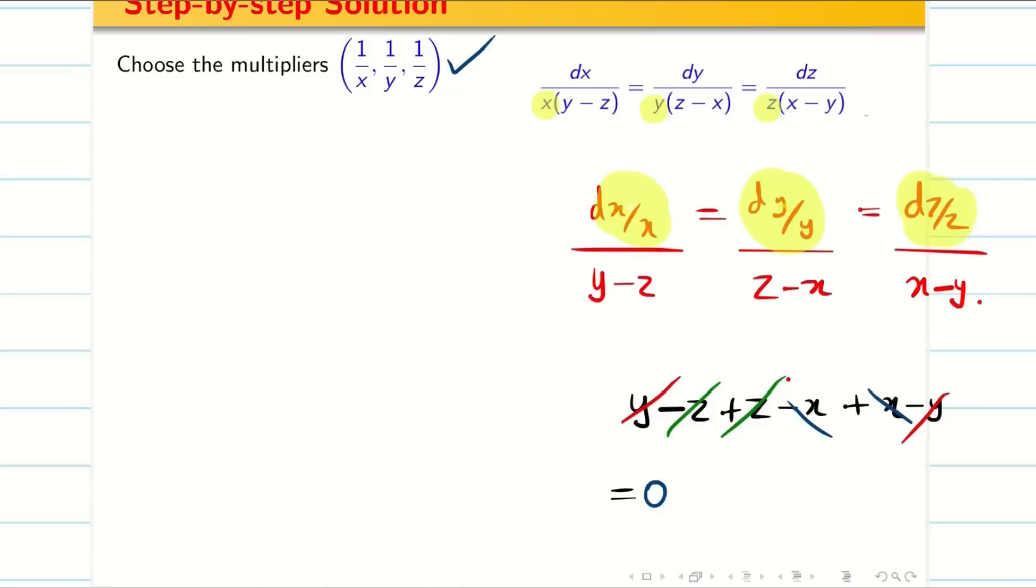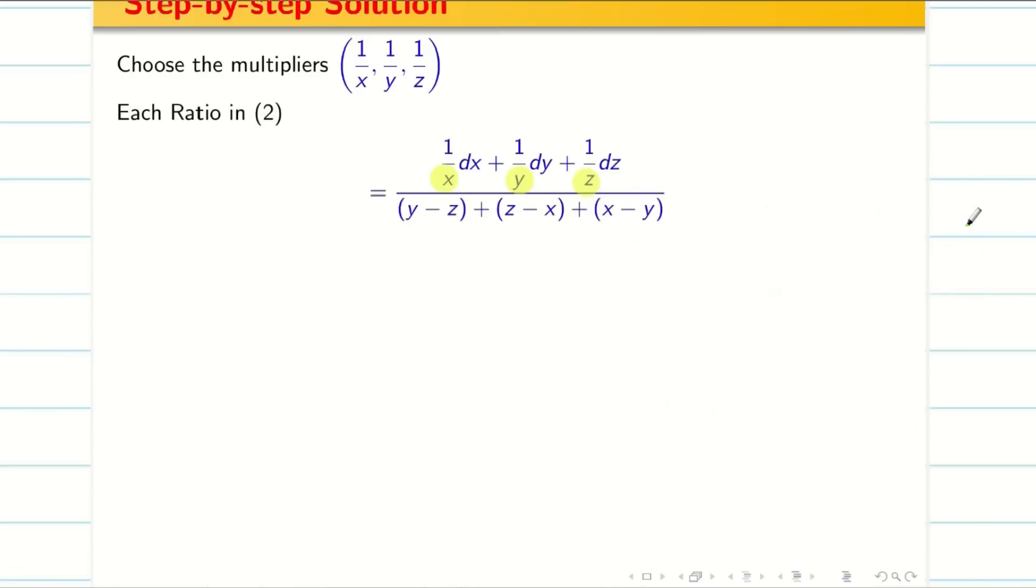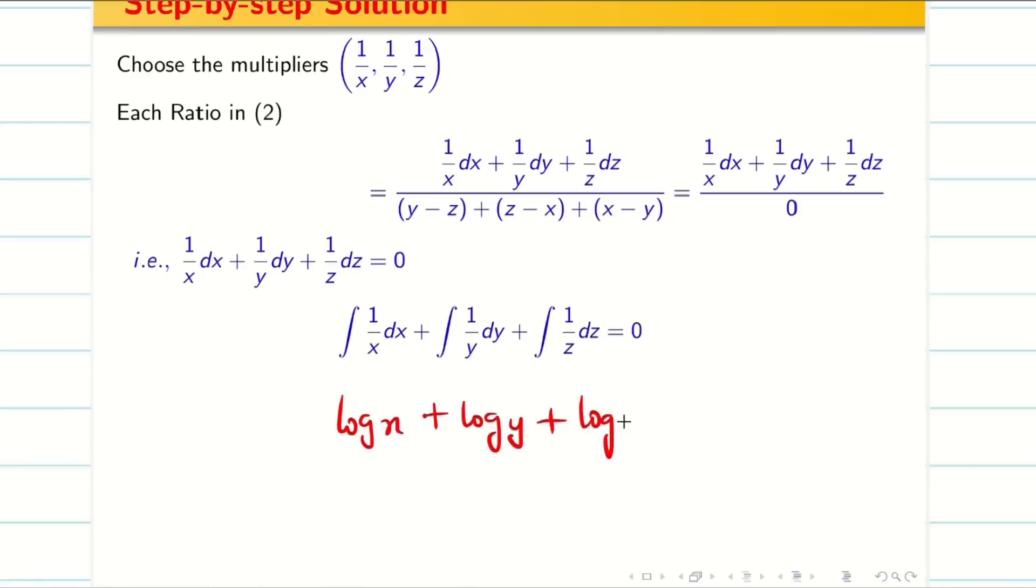My denominator becomes zero, therefore the numerator is also zero. Integrating this: ∫dx/x + ∫dy/y + ∫dz/z = 0. Integration of dx/x is log x, so log x + log y + log z.